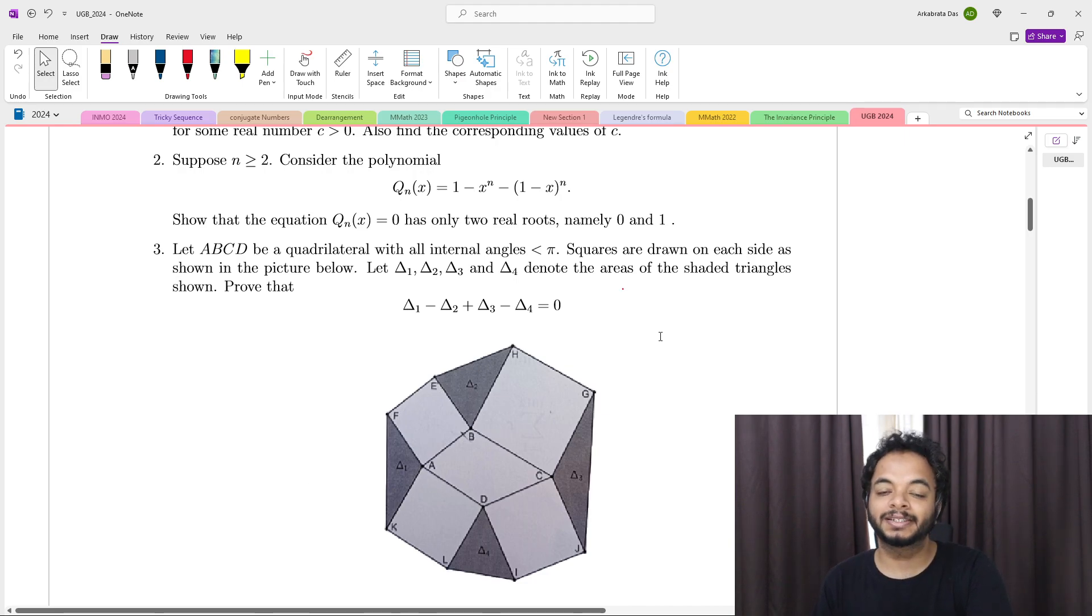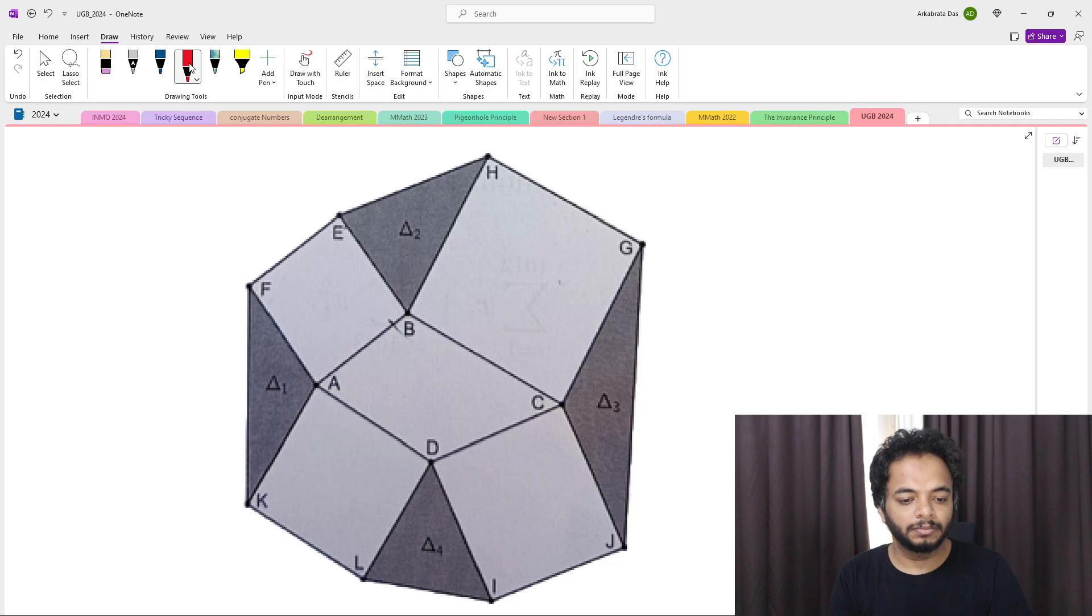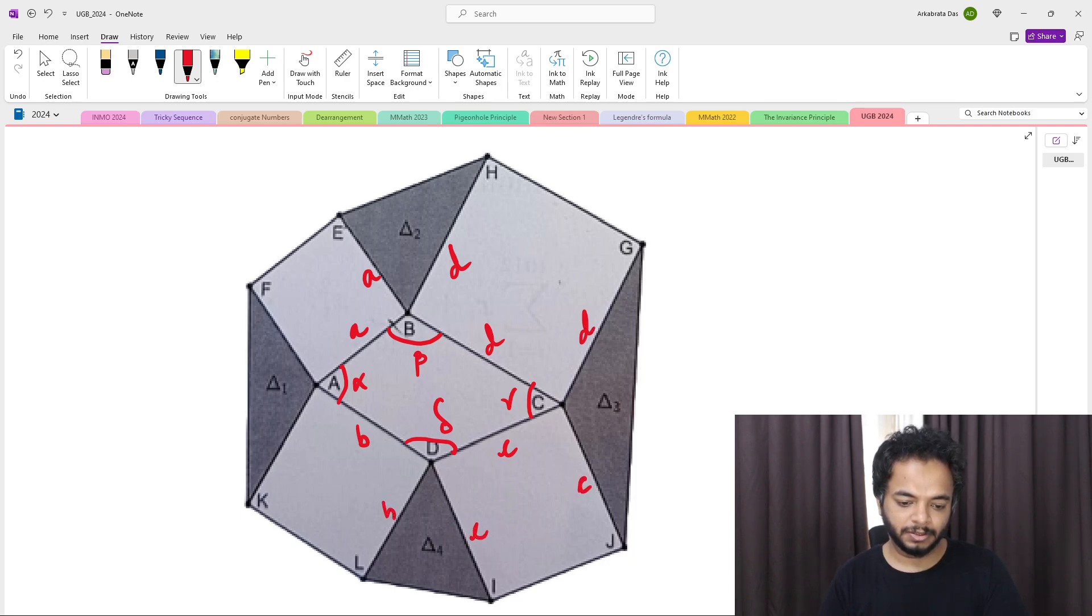You have to show that delta 1 minus delta 2 plus delta 3 minus delta 4 is 0. Let's zoom in. Let's take this angle as alpha, this as beta, this is gamma, and this is delta. Let's take the side lengths as a, b, c, and d. So this is a, this is d, this is c, and this is b.